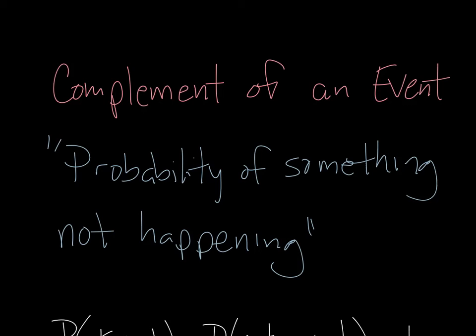Let's talk about another vocabulary term, the complement of an event. Basically, this means it's sort of the flip side of a probability. It's the probability of something not happening. When we say what's the probability of something happening, the complement of that is that it doesn't happen.